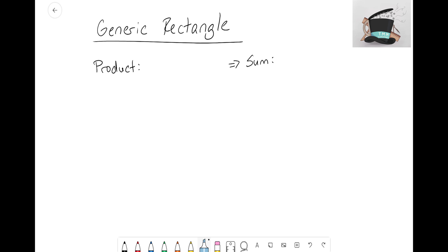Our product is 3x times the expression 5x² - 2y. Our goal is to build out this generic rectangle with these sides to figure out what the sum is.